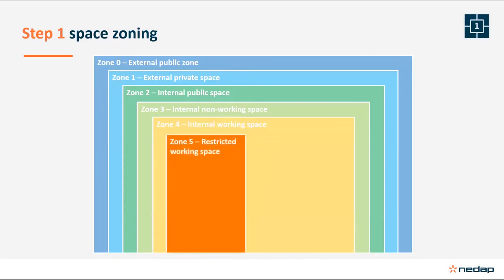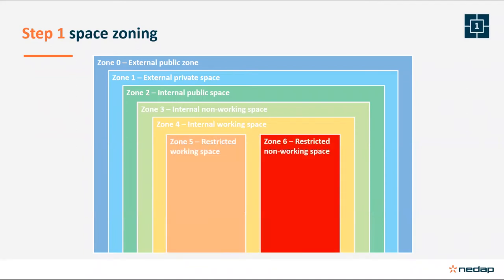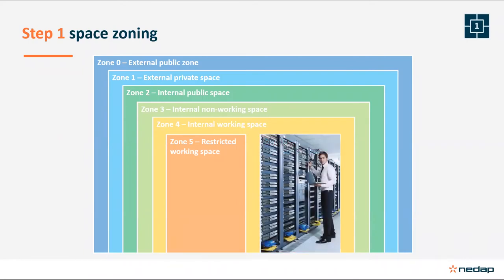Zone five is what is called restricted working space — a work area which isn't freely accessible for all employees, like a laboratory, an area requiring special safety training, an R&D facility, or a documentation area. This is basically a critical zone. Zone six is restricted non-working space — a non-working area with restricted access, such as an IT room or a technical room with critical installations. Not all zones will be present in every building, so it is not obligatory to use all zones in all situations.